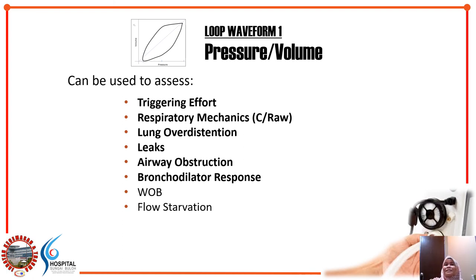In summary, you can use the pressure-volume loop to assess triggering effort (fish tail), compliance, lung over-distension, leaking, and airway obstruction — the loop becomes wider with airway obstruction. You can also assess bronchodilator response: with obstruction the loop is wider, and after bronchodilator treatment you expect to see narrowing.